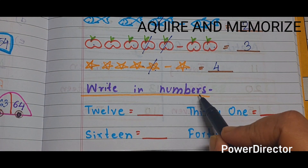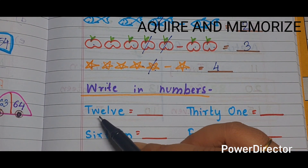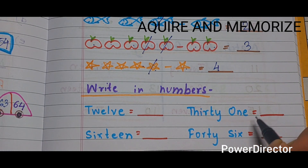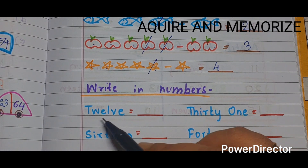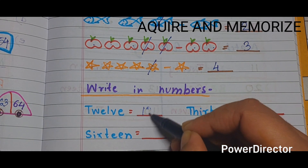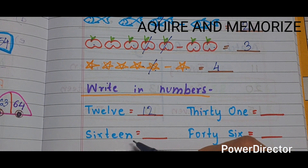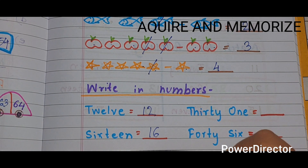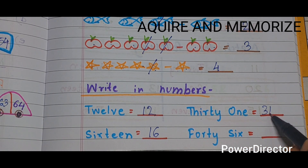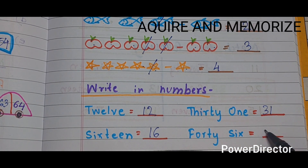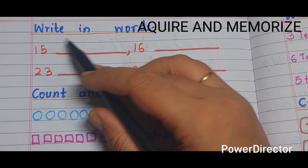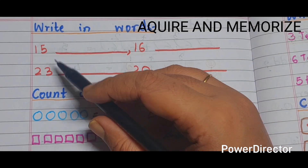Next section is 'write in numbers'. The number names are given and we have to write the digits. TWELVE — we write 12. SIXTEEN — we write 16. THIRTY-ONE — we write 31. FORTY-SIX — we write 46.